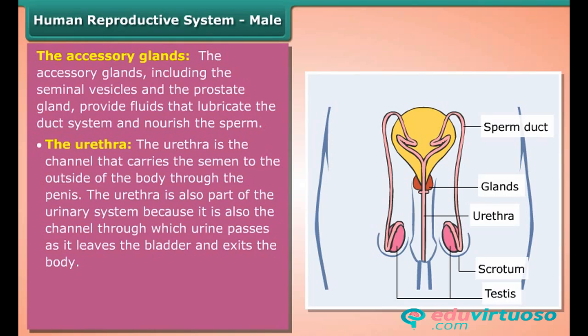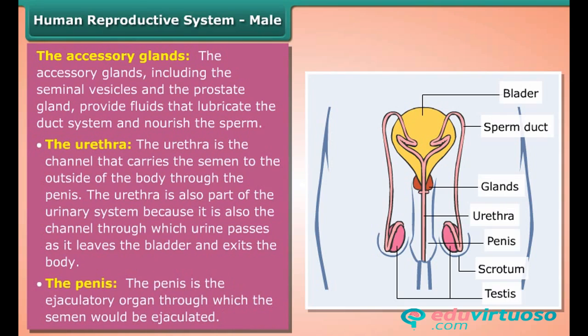The urethra is also part of the urinary system because it is also the channel through which urine passes as it leaves the bladder and exits the body. The penis is the ejaculatory organ through which the semen would be ejaculated.